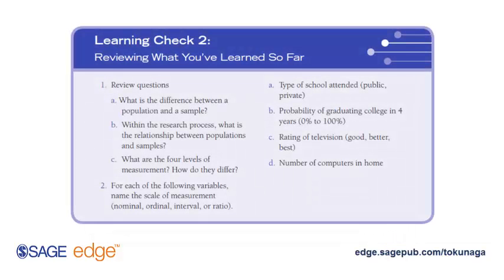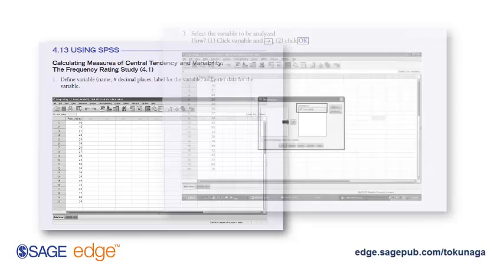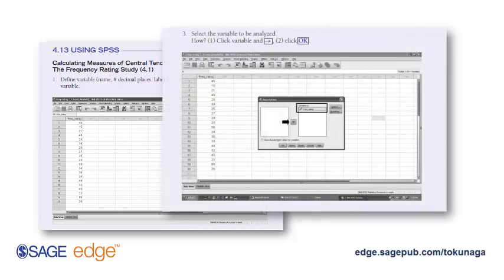Frequent learning checks are incorporated into each chapter to give students an opportunity to practice their skills as they learn. If you're using SPSS software, step-by-step instructions with large screenshots are included at the end of each chapter. If you're not using SPSS, you can simply move past these sections.